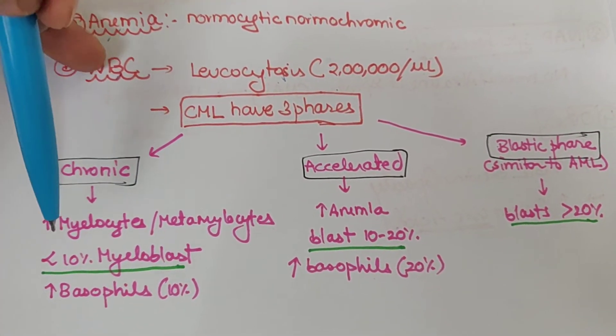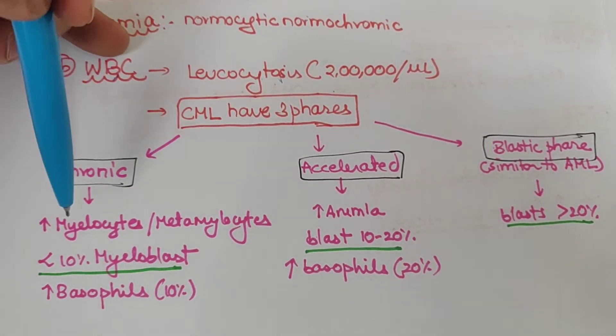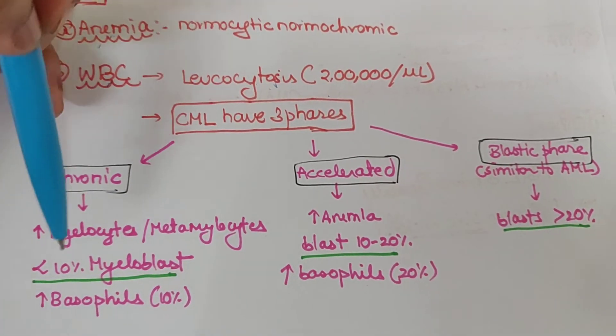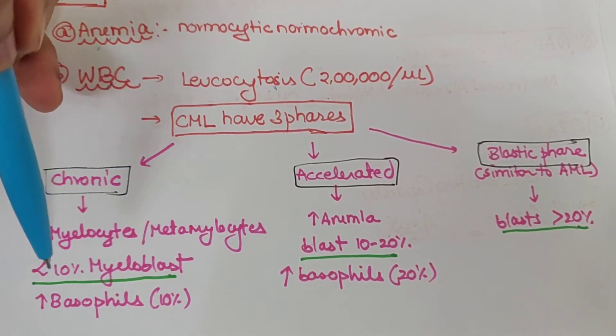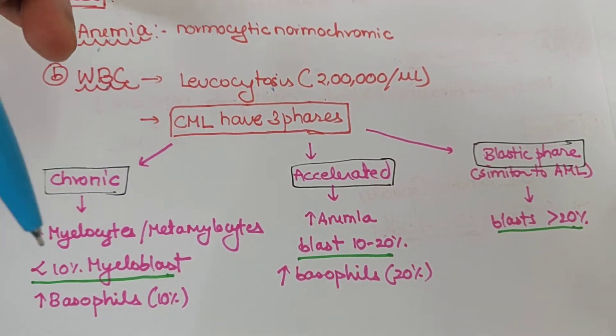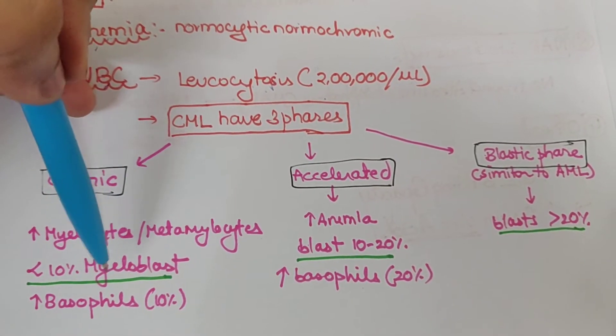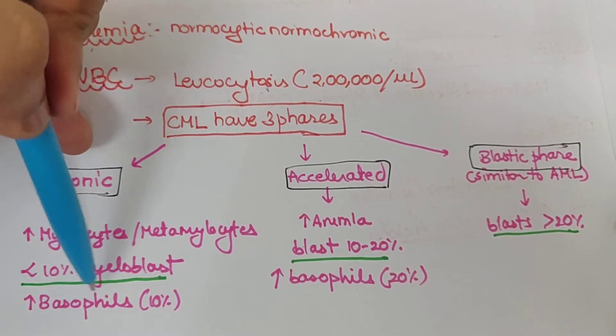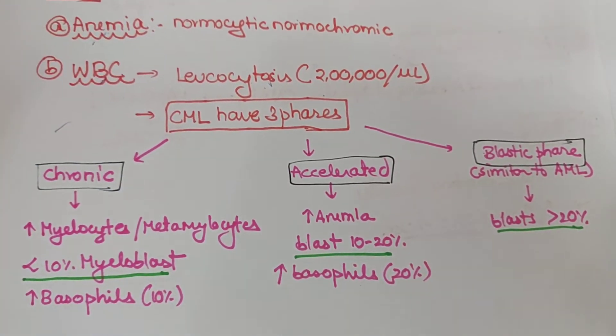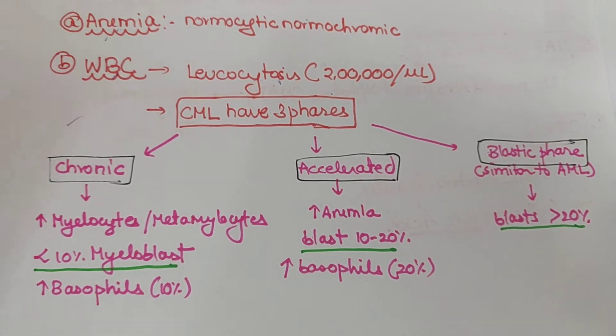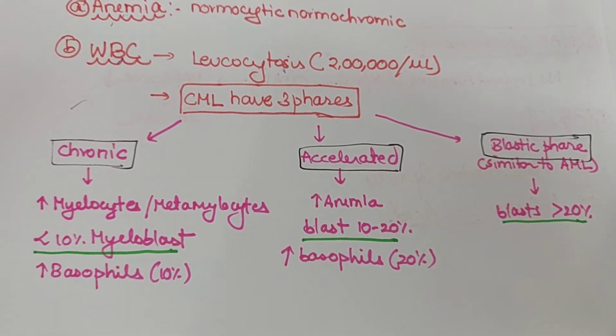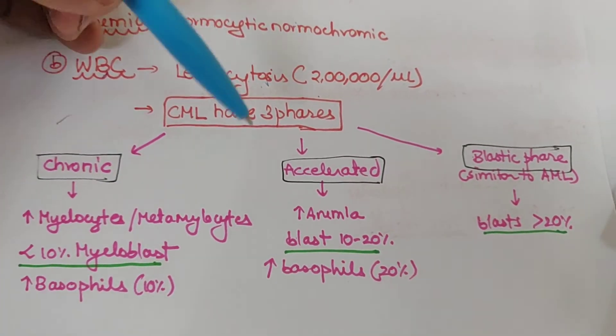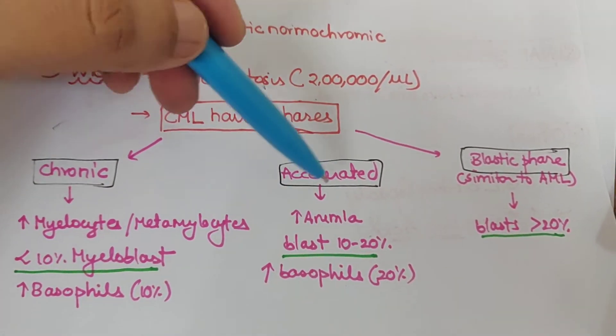In chronic phase there are increased mature or maturing forms like myelocytes and metamyelocytes. Myeloblasts are less than 10%, and basophils are increased to about 10%, which is very high compared to the normal 1-2 basophils in differential leukocyte count.